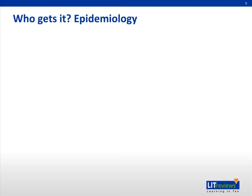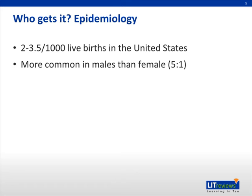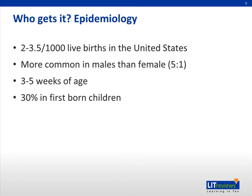Importantly, the epidemiology for this diagnosis: it occurs in 2 to 3.5 patients per 1,000 live births in the United States. It is five times more common in males than in females, and generally presents in children between three to five weeks of age. 30% of these patients are the firstborn children in their families, and familial aggregation is common with a 20-fold higher incidence among siblings.